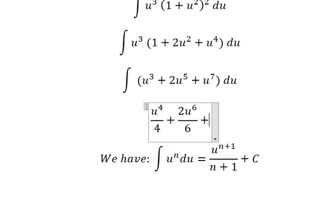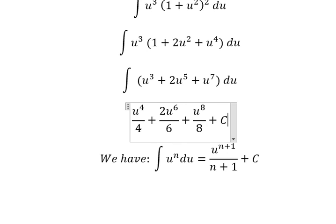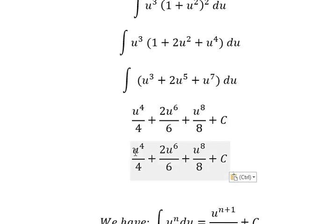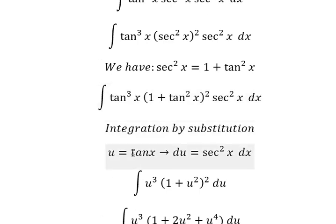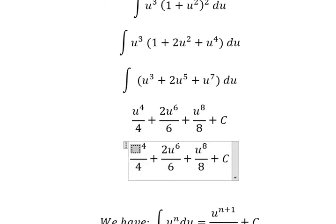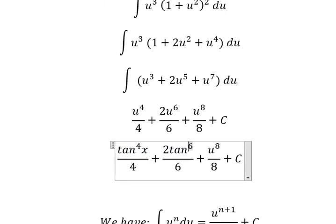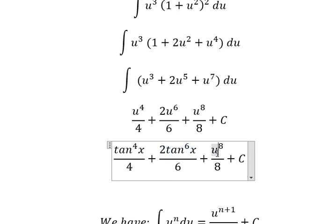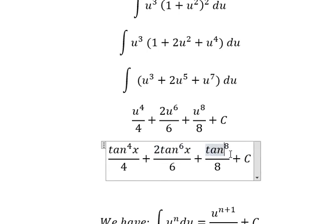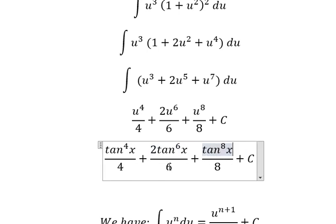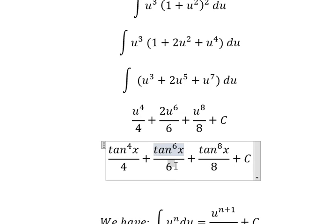And the next one is 7 plus 1, which gives us 8. Now u is tan x. For the second term, dividing by 6 we have 1 over 3. So the final answer is tan to the fourth x over 4 plus tan to the sixth x over 3 plus tan to the eighth x over 8 plus C.